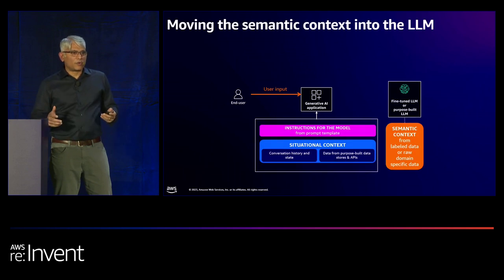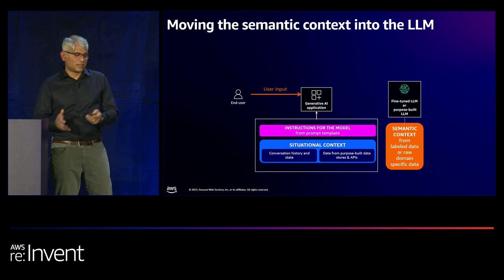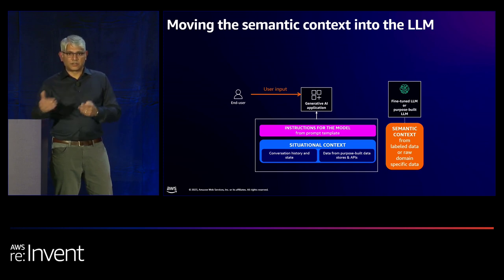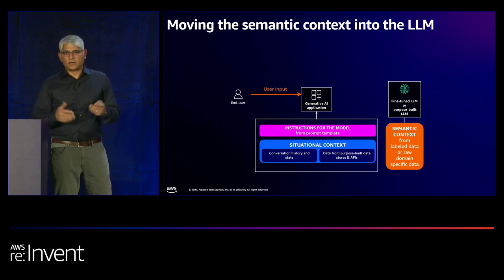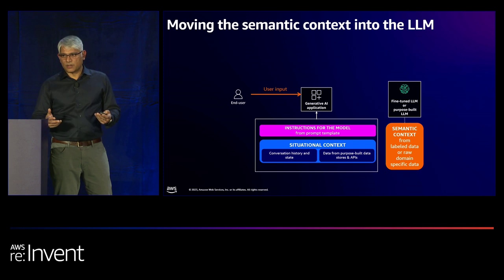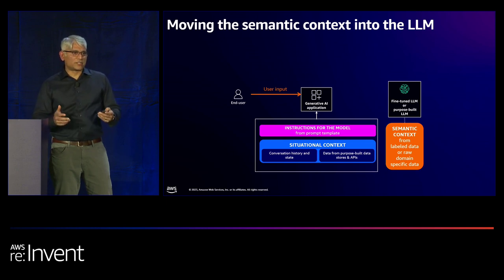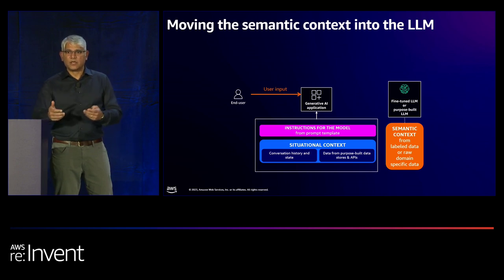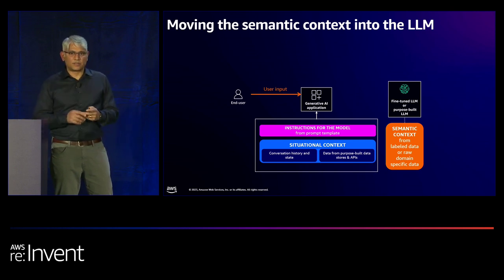There's another way to provide situational context. Instead of including it in the prompt, you can take your question-answer pairs — questions people asked and answers given — clean that data up, and fine-tune a model like Llama 2. This is called fine-tuning: building your context into the large language model itself. When you ask a question, the model takes into consideration all the Q&A pairs provided during training and contextualizes its answer accordingly.